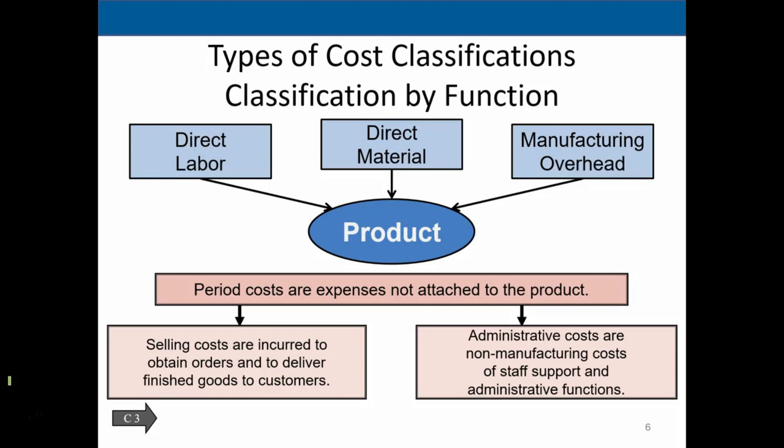Then we have period costs, which are often the selling and administrative costs. Most of the time we think about the production process — comparing sales to production — and then the period costs separately. For the most part, period costs are more standard or fixed in nature. We think about how many units we need to produce to generate revenue to clear the production costs, and then how many to clear the selling and administrative costs. The administrative costs — like the accounting department and management office — are not directly tied to the production process.